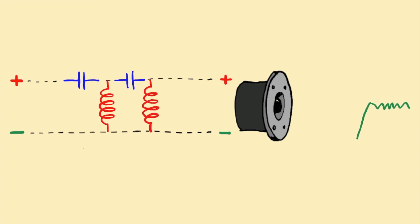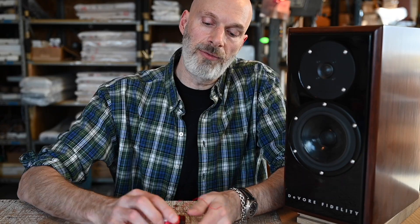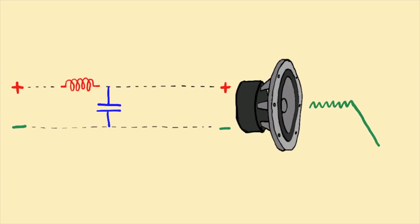The same thing happens essentially upside down for the low-pass filter. If we want a steeper low-pass filter, we add a capacitor in parallel to essentially siphon off high frequencies while allowing the low frequencies to get through to the woofer.